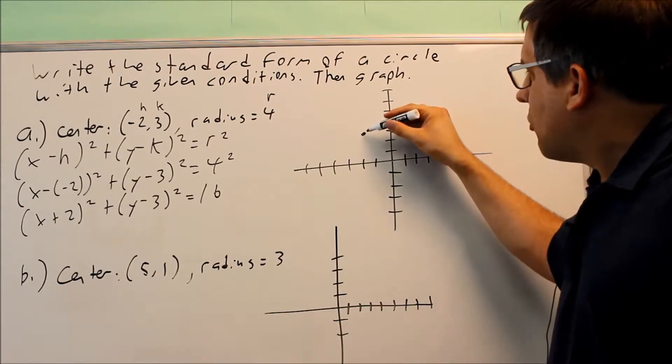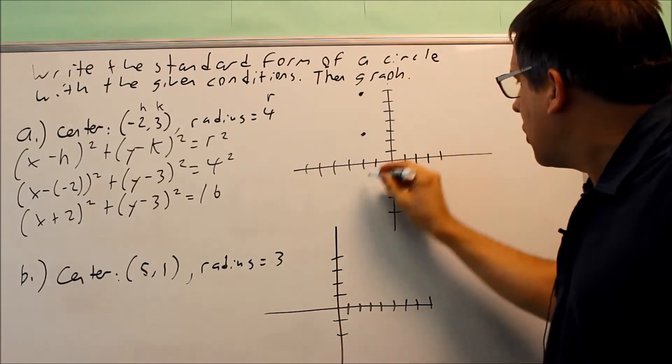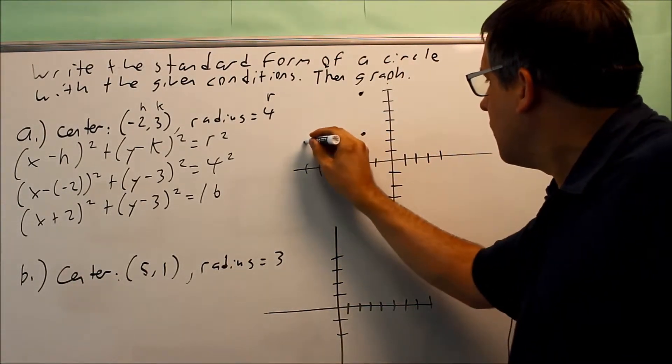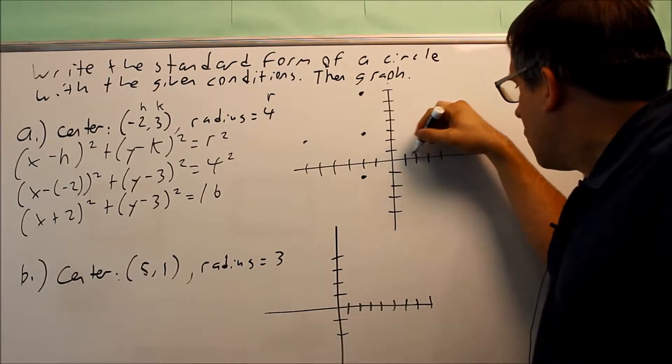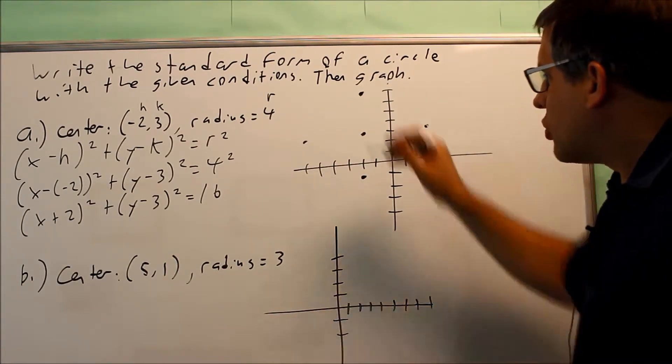So what I'm going to do is I'm going to go up 4 units because that's the radius. I'm going to go up 4, I'm going to go down 4, I'm going to go to the left 4, and I'm going to go to the right 4. So I go 1, 2, 3, 4 here, and that would be my 4 reference points.